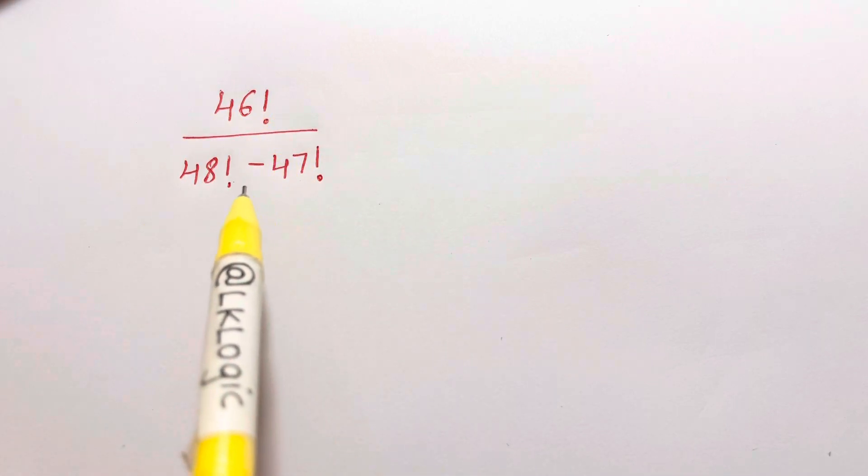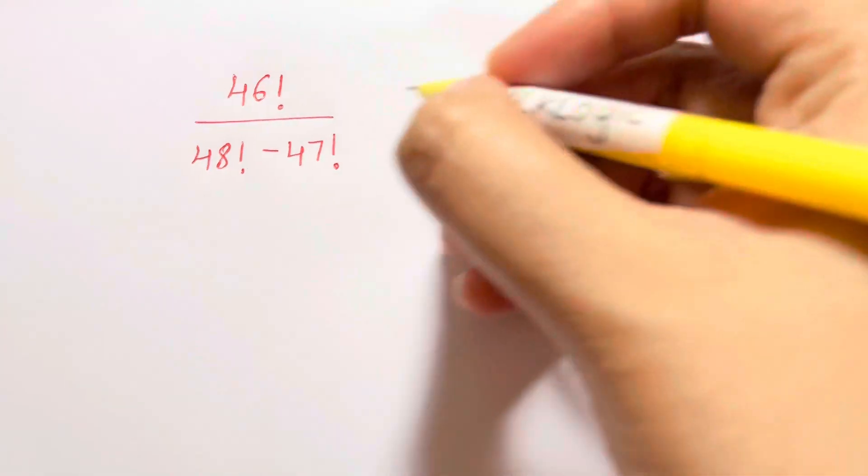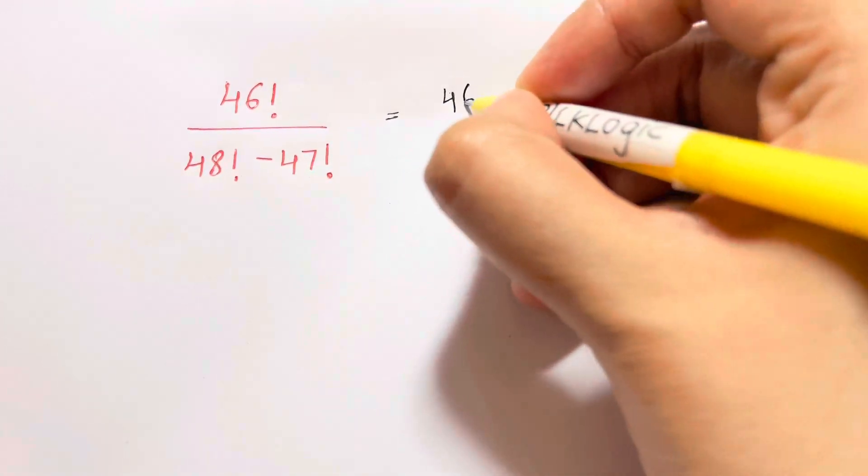Hi guys, I have another interesting factorial problem for you all. Now here I have 46 factorial over 48 factorial minus 47 factorial. So how are we going to do that? First of all, I'm going to write this 46 factorial over 48 factorial.